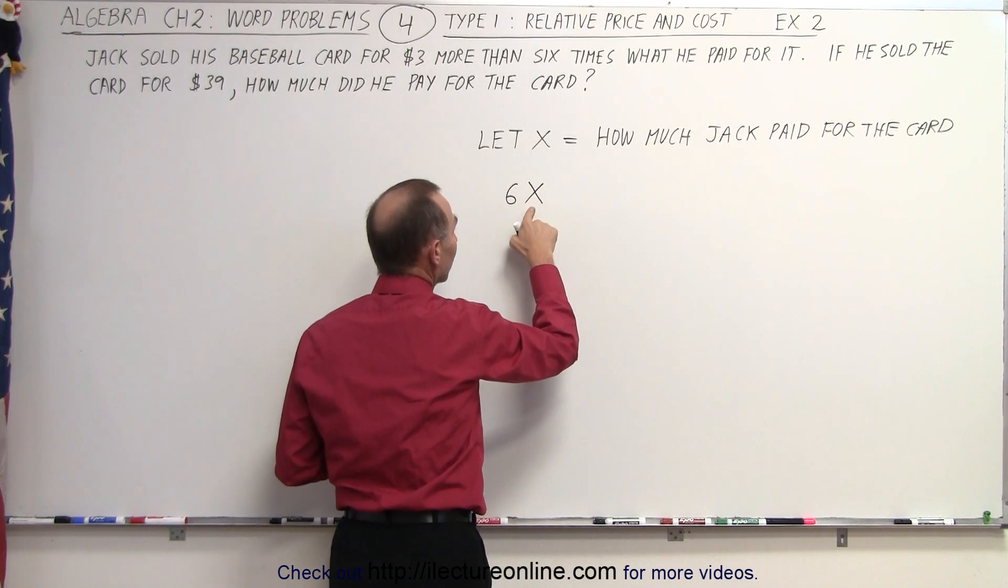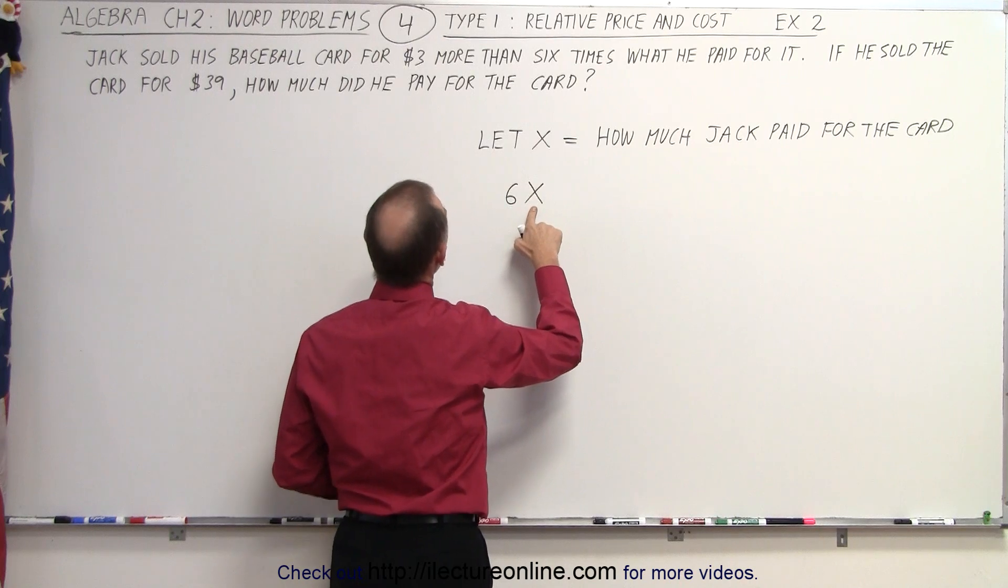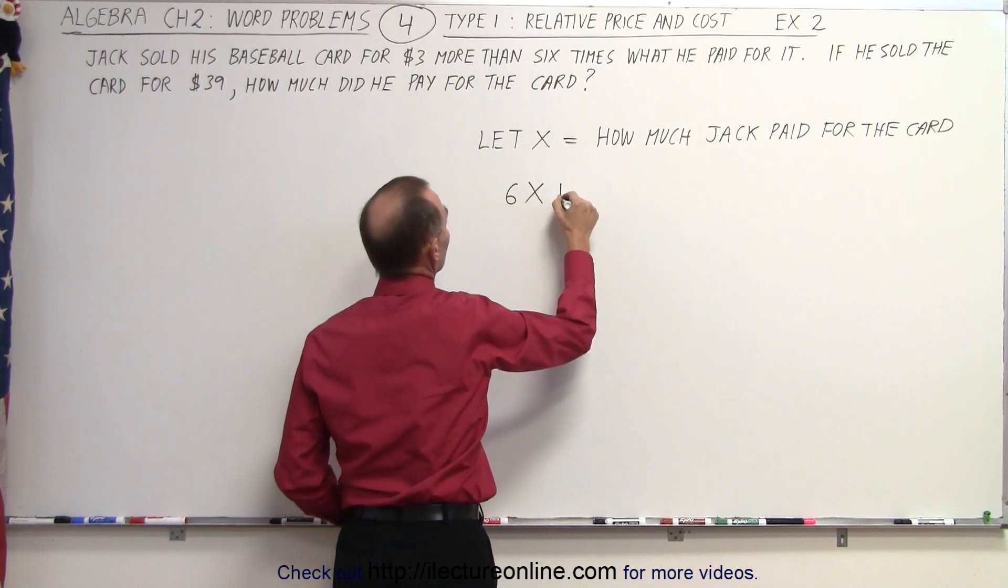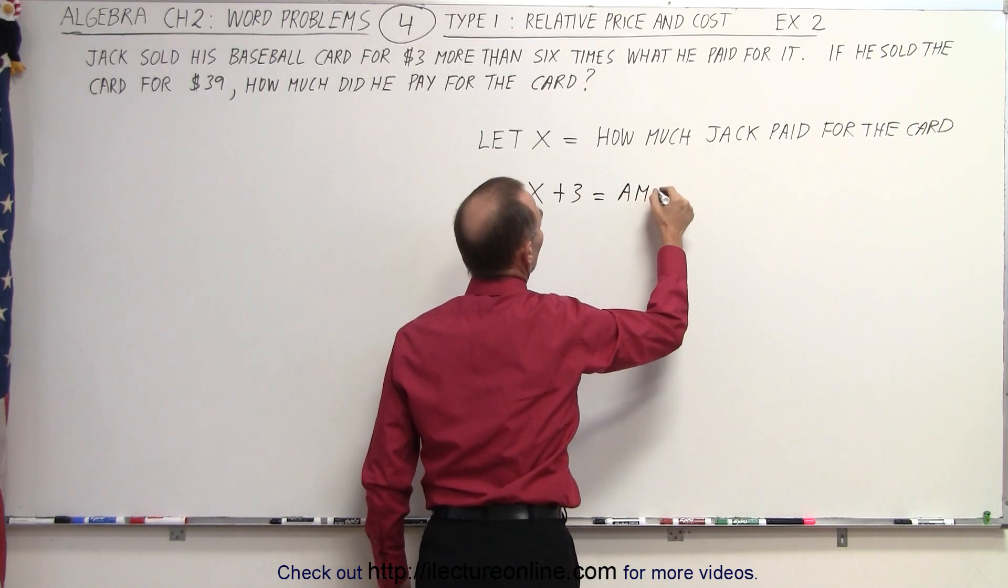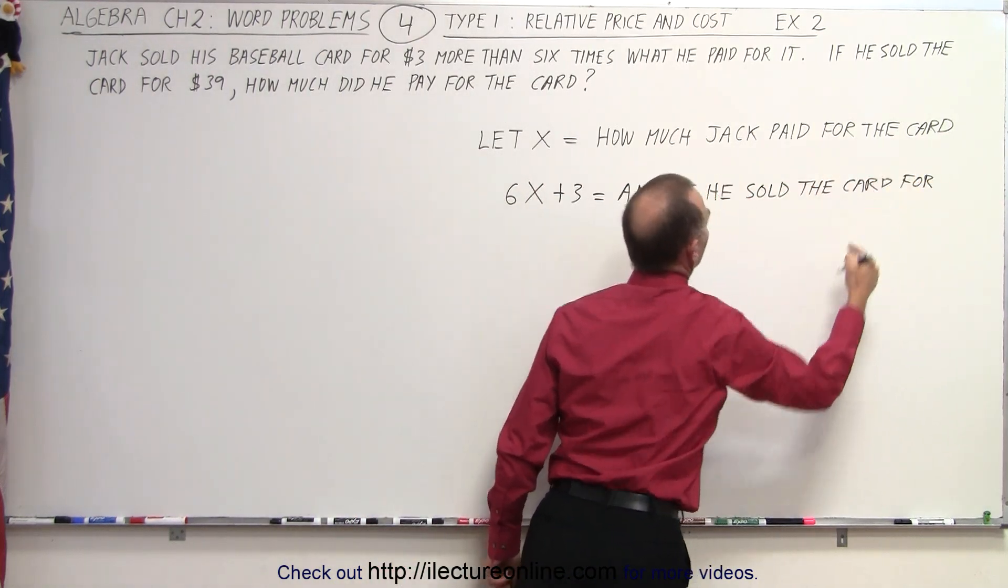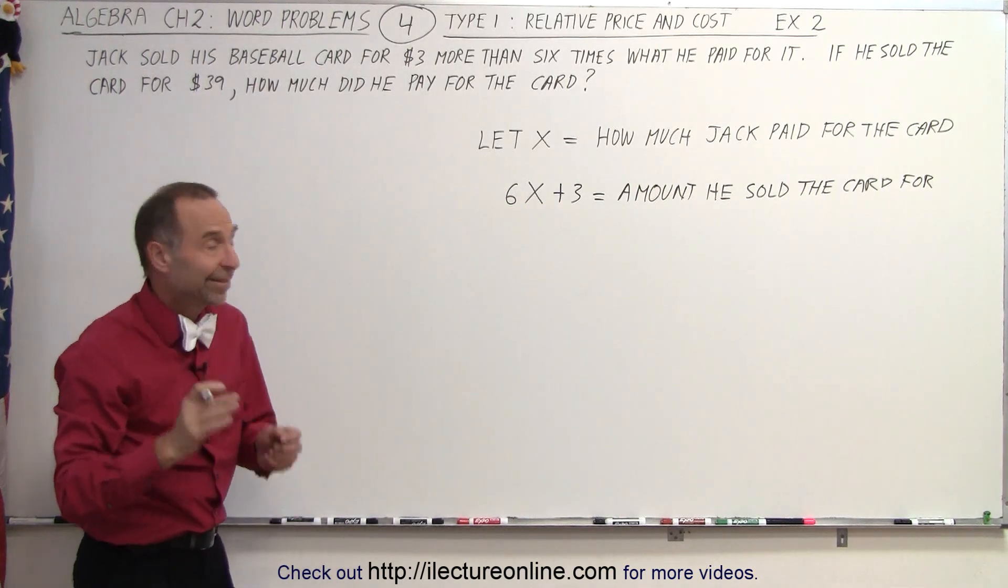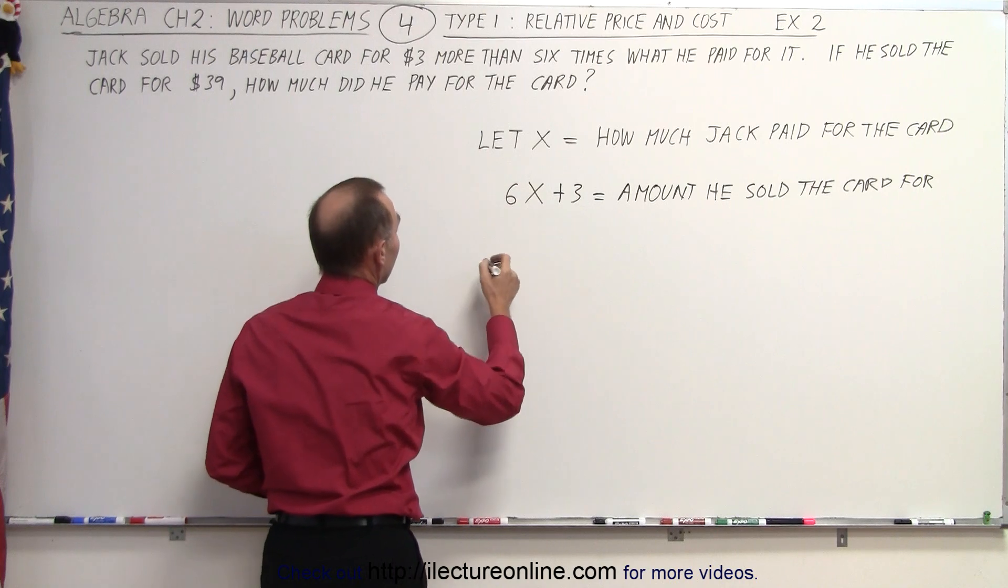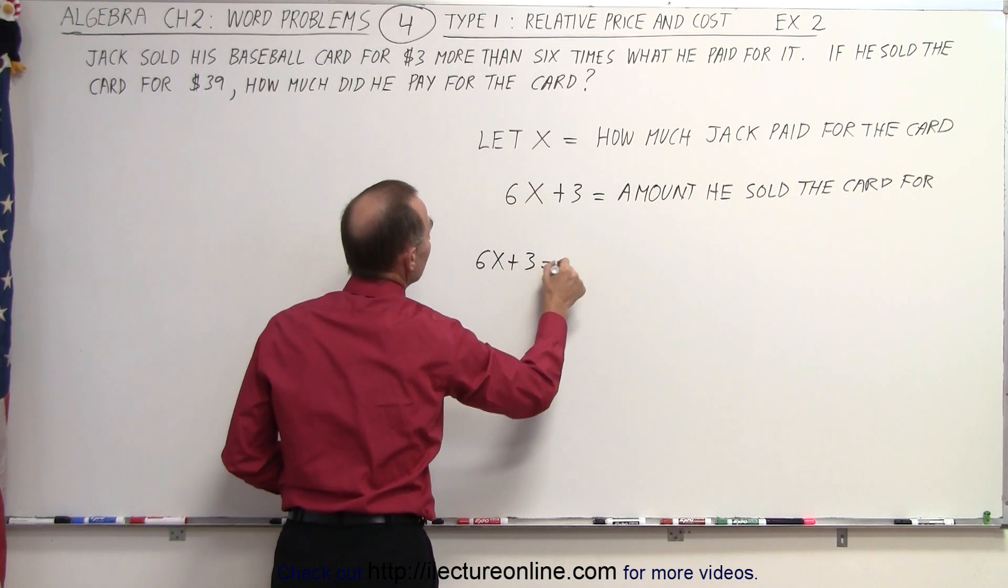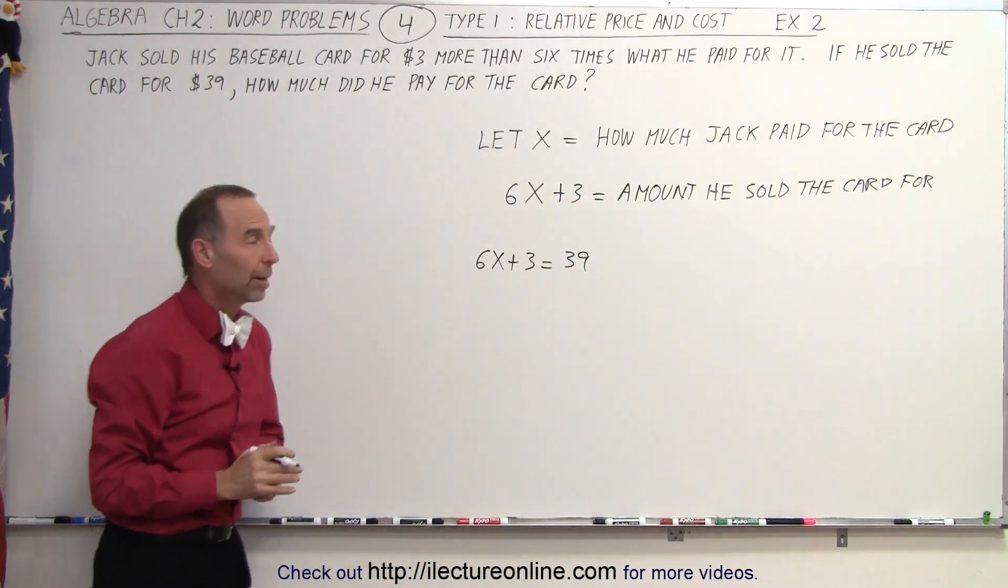Six times X, because X represents how much Jack paid for it. That's six times as much as he paid for it, plus $3. That equals the amount he sold the card for. Since that equals $39, we can set 6X plus 3 equal to 39. That's the relationship we got from reading the problem.